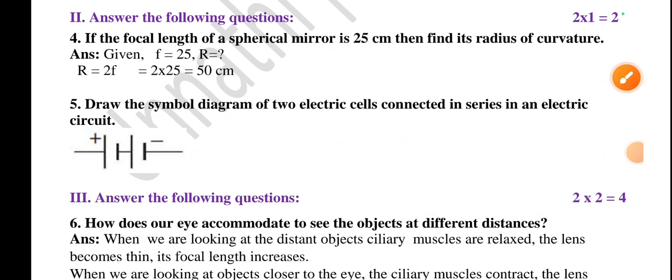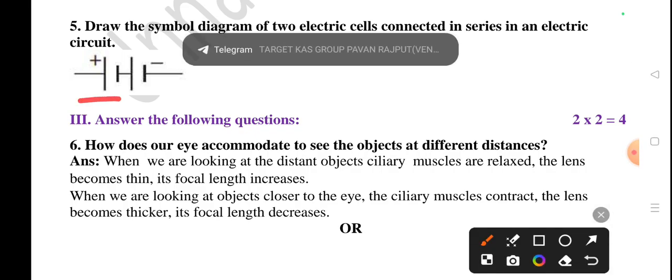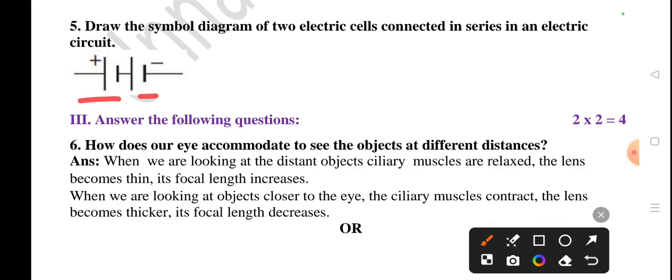Question number five: Draw a symbolic diagram of two electric cells connected in series in an electric circuit. See, this is one cell and this is another one. Positive terminal, one negative terminal, another positive, negative. Two cells connected in series is shown here.